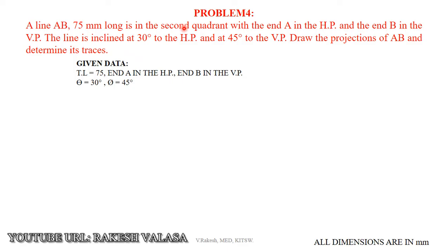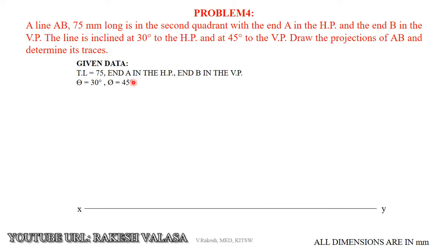The important condition is the line is in the second coordinate — that means the line is above the HP and behind the VP. For that condition we have to construct the final front view and final top view. Since the line is in the second coordinate, we can get both the front view and top view above the XY line.